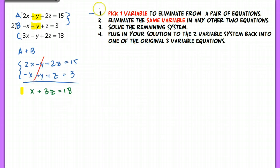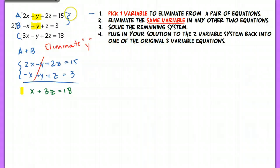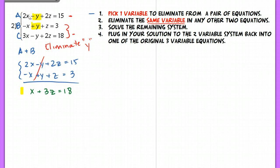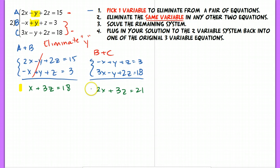Next, eliminate the same variable — the Y — from another pair of equations. We don't want to use lines A and B again together. I would pick lines B and C instead of A and C, because A and C have the exact same sign in front of Y, so I'd have to multiply by a negative. So I'm going to add B plus C together. After adding B and C, I'm left with a new resulting equation, and now I also have only two variables.